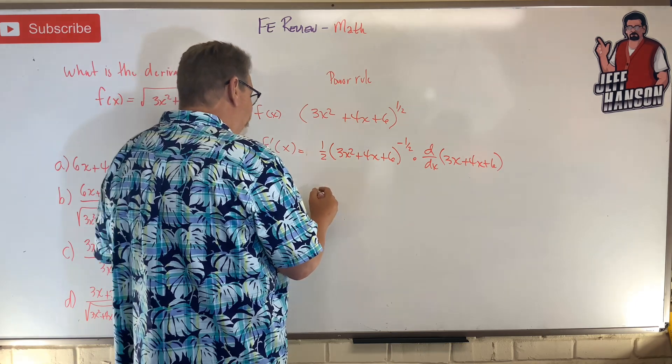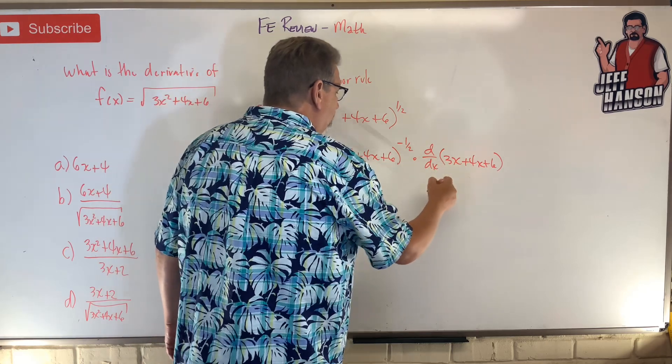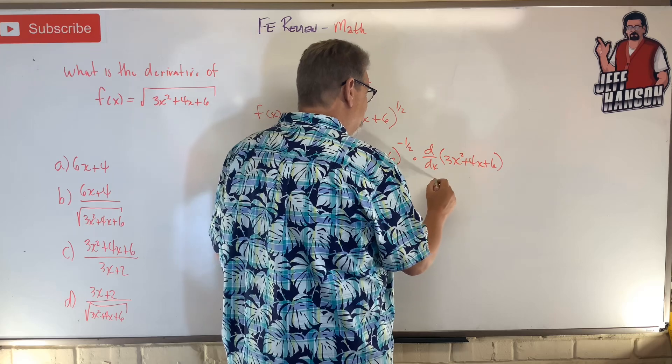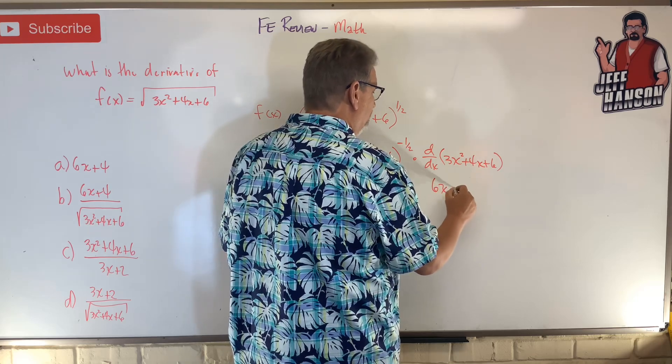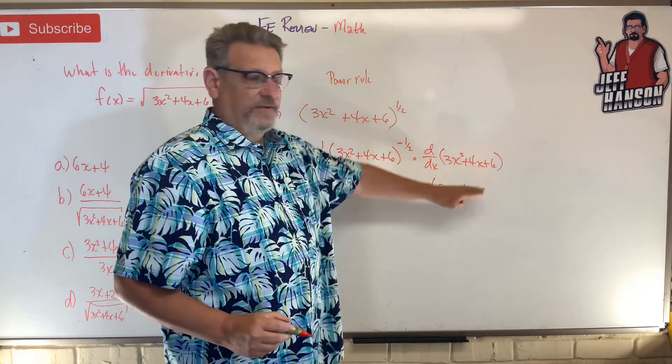Well, let's do this over here. The derivative of this becomes what? Oh, that's an x squared, isn't it? It's going to become 6x plus 4. To take the derivative of that over there, then we're going to multiply that times this bit over here.